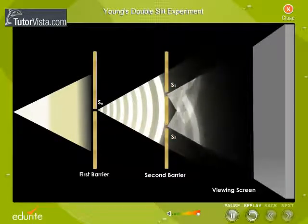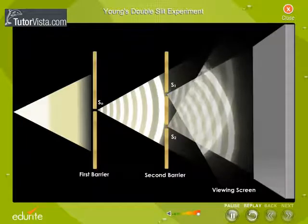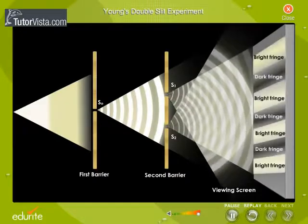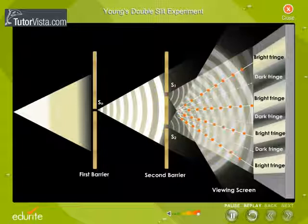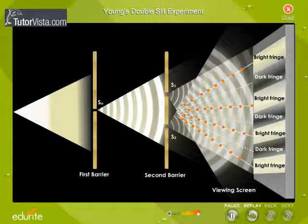These two slits served as a pair of coherent light sources because waves emerging from them originate from the same wave front and therefore maintain a constant phase relationship.